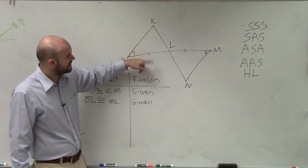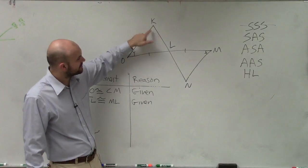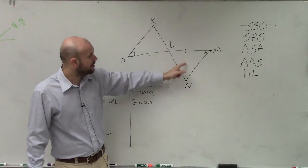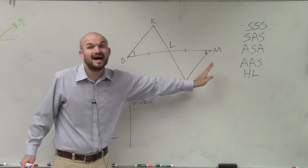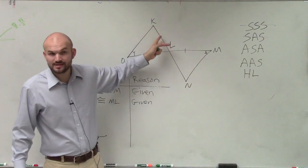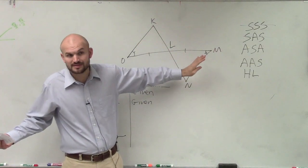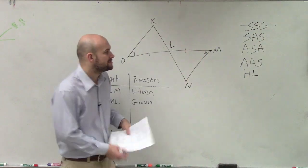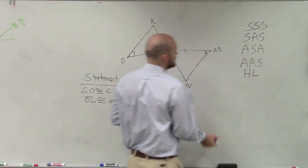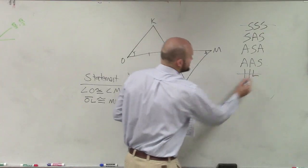If I had to do angle, angle, side, that means obviously I'd have to show that these two angles are equal to each other. Well, if we knew that these were parallel lines, we could show that these are alternate interior angles. But these two lines are not parallel. At least it's not given to us that they're parallel. So we can't assume them. So angle, angle, side is not going to work. We know there's no right angle, so HL is not going to work.